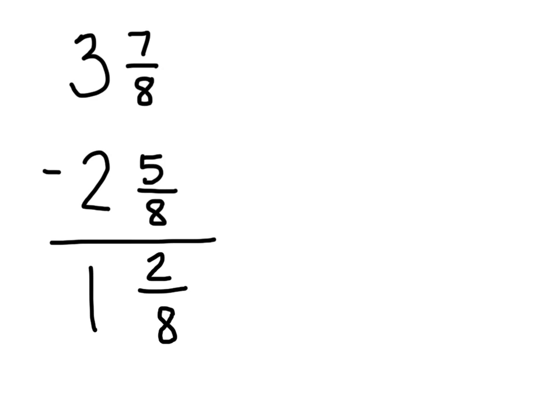My last and final step as I always need to do when I'm working with fractions is try to find the simplest form. So I know that 2 eighths can be simplified and it changes into 1 fourth when I divide both the numerator and the denominator by 2. So 1 and 1 fourth is my final answer.